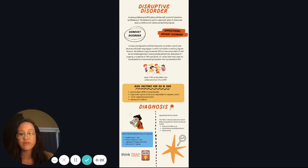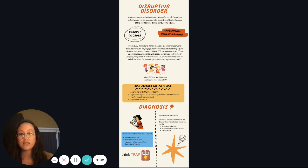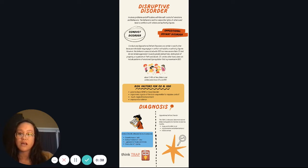They are both similar to each other because they involve behaviors that violate the rights of others and involve conflict with authorities. However, ODD does not include aggressive behaviors that are usually presented in individuals with CD, and individuals with CD do not have patterns of emotional dysregulation that are presented in individuals with ODD.